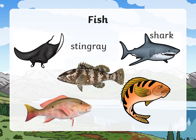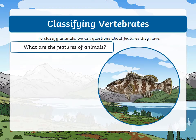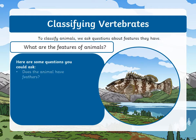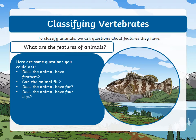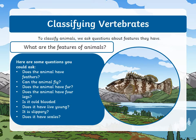Now let's look at fish. You notice there's a stingray and a shark included as fish — yes, stingrays are fish. How can we classify this fish? Does it have feathers? No. Can fish fly? There are a few that may be able to fly a little distance. Does the animal have fur? No. Does the animal have four legs? No. Is it cold-blooded? Does it have live young? Yes. Is it slippery? Sometimes the scales are slippery. Does it have scales? Of course it does.